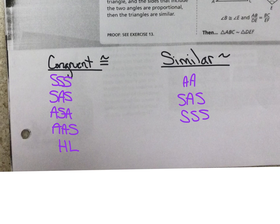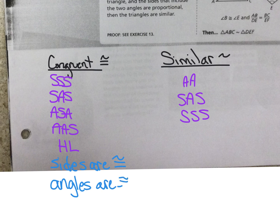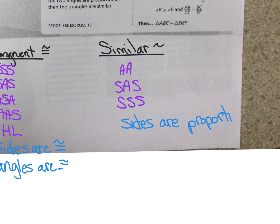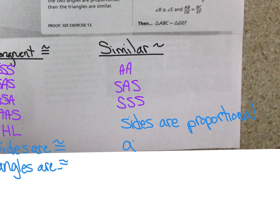Congruent means that all the sides are congruent and all the angles are congruent. Similar means that the sides are proportional and angles are congruent. So what this means is if I have two angles that are congruent, I know I have similar triangles. If I have sides that are proportional, then an angle that's congruent, and then a side that's proportional, I know I have similar triangles. If all three sides are proportional to all three sides of the other triangle, I know I have similar triangles.